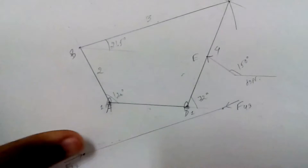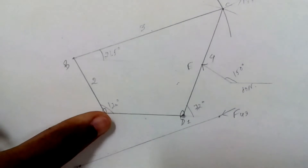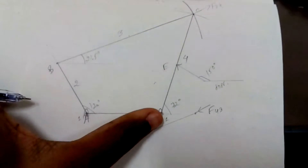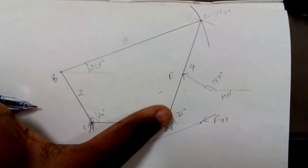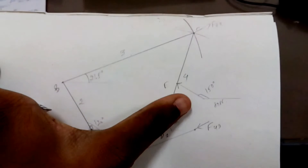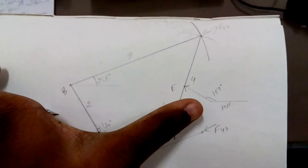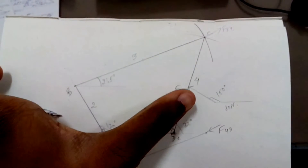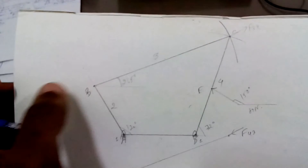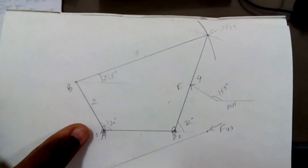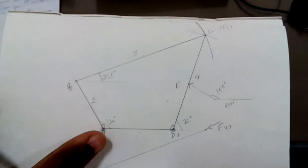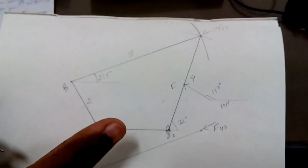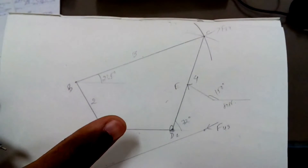The mechanism has angles of 120 degrees, 265 degrees, and 72 degrees, with a force of 180 Newton at 150 degrees. I am calling the fixed link as 1, the crank as 2, the coupler as 3, and the output link as 4.